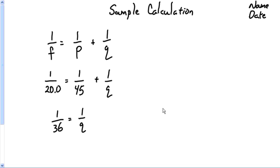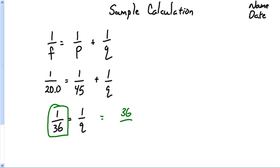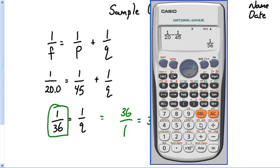Wait — this equation does not say q equals 36. You found 1/q, so if you want to find q you need to take the reciprocal. The reciprocal of 1/36 is 36/1, which means q = 36. If you're on your calculator and it gives weird numbers, just hit the x⁻¹ button and hit equals — that gives you the reciprocal. So 1/36 → reciprocal → 36. That's how you get your q values.